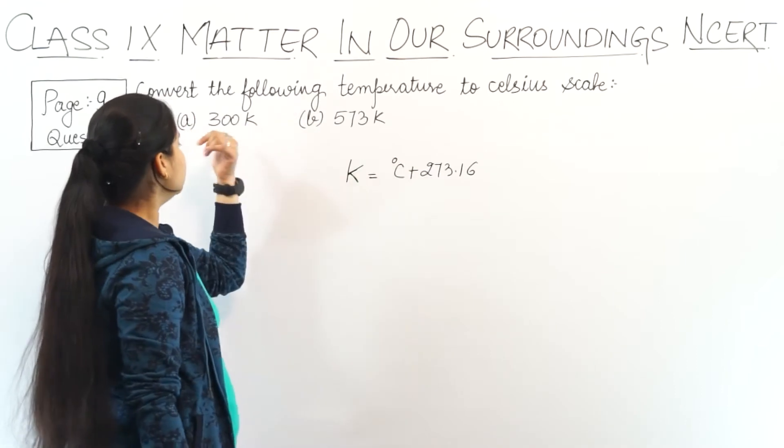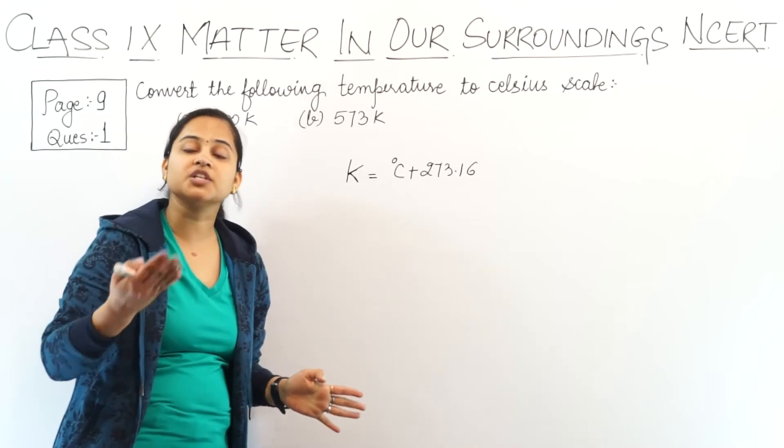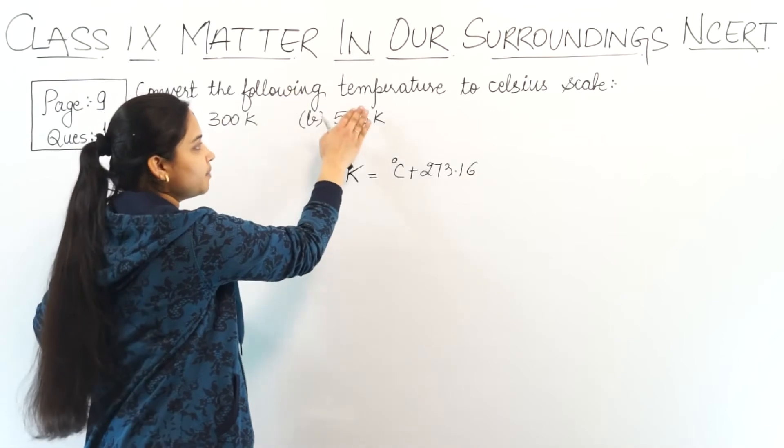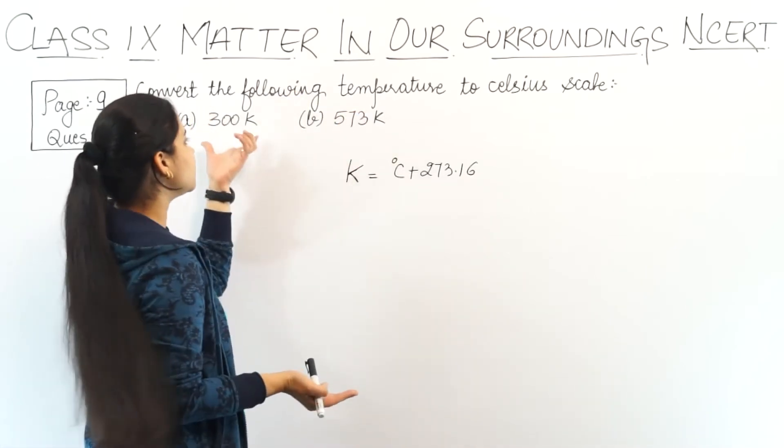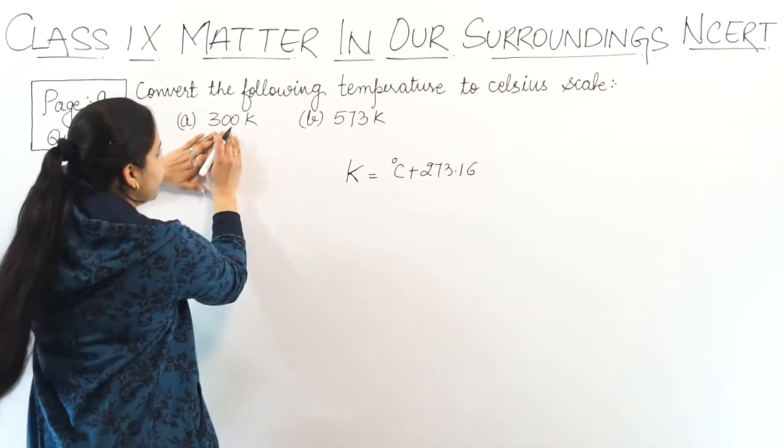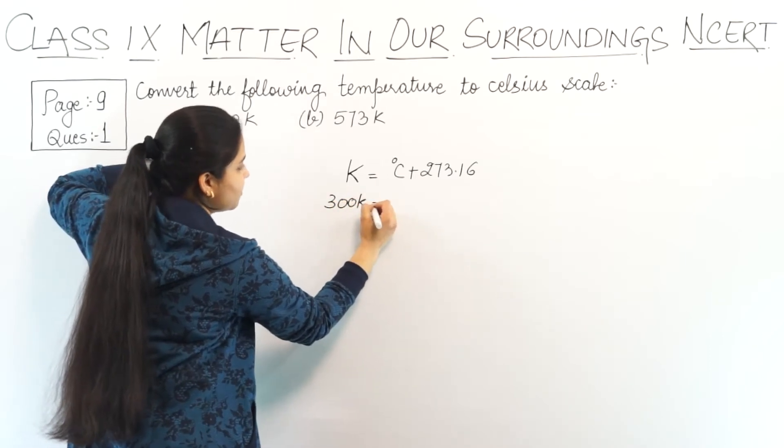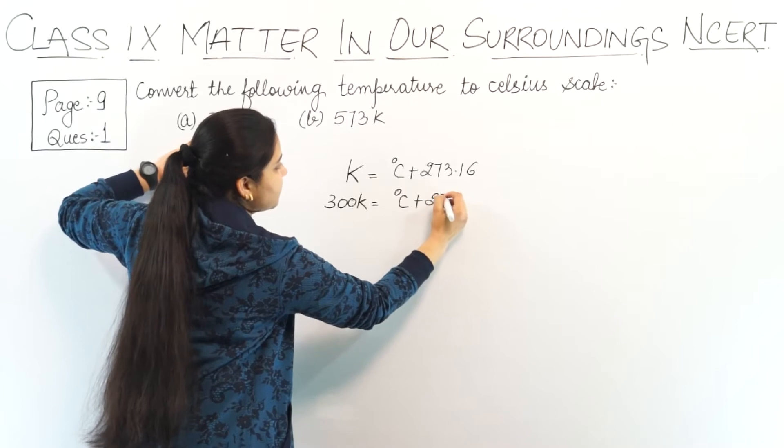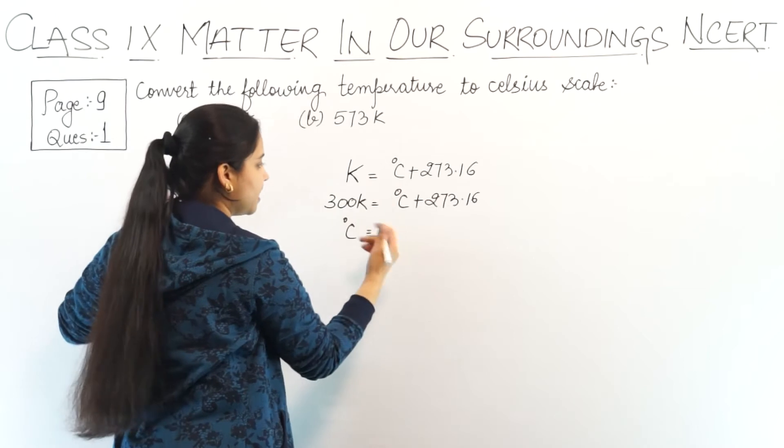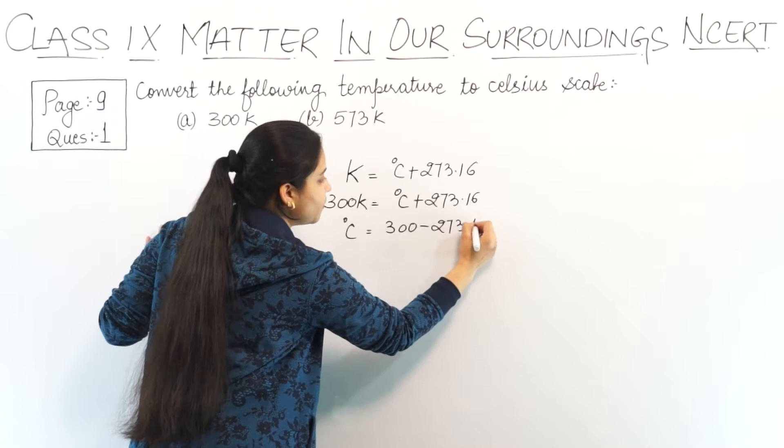Now here we have 300 Kelvin. I have to change Kelvin to degree Celsius. So I have to convert these temperatures into degree Celsius.